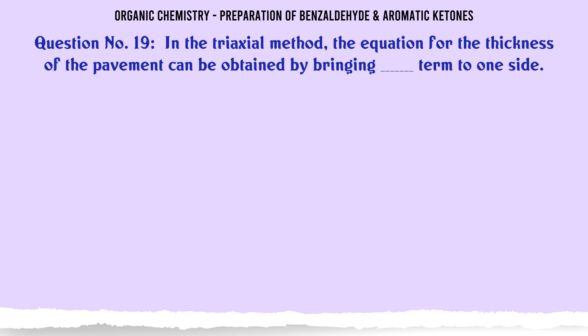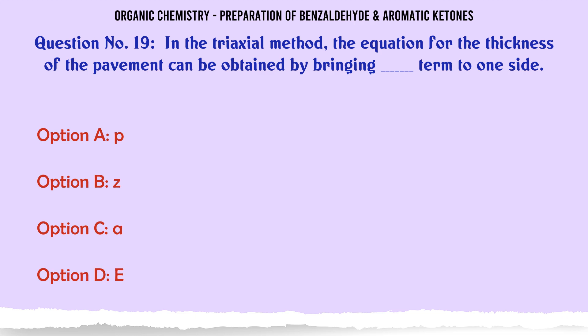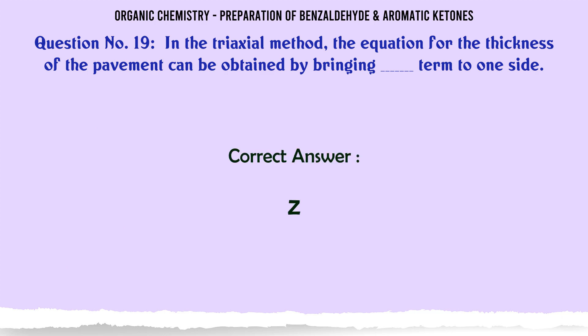In the triaxial method, the equation for the thickness of the pavement can be obtained by bringing which term to one side? A. P. B. Z. C. A. D. E. The correct answer is Z.